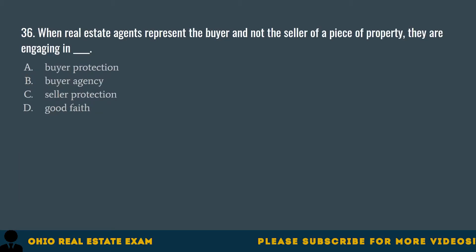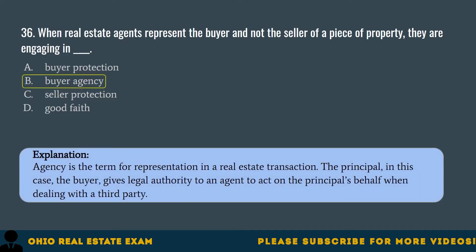Question 36. When real estate agents represent the buyer and not the seller of a piece of property, they are engaging in... A. Buyer protection. B. Buyer agency. C. Seller protection. D. Good faith. The correct answer is B. Buyer agency. Agency is the term for representation in a real estate transaction. The principal — in this case, the buyer — gives legal authority to an agent to act on the principal's behalf when dealing with a third party.